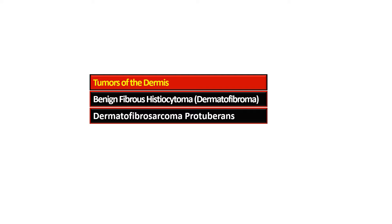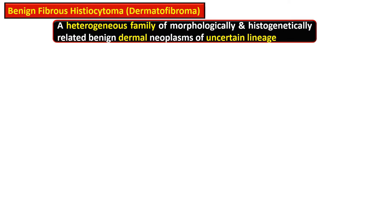In this video, benign fibrous histiocytoma — the most important and common form being dermatofibroma — is discussed. Another tumor within the dermis is dermatofibrosarcoma protuberans. Benign fibrous histiocytomas are a heterogeneous family of morphologically and histogenetically related benign dermal neoplasms.